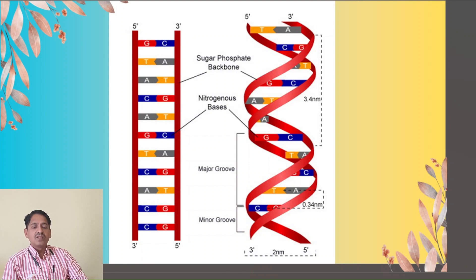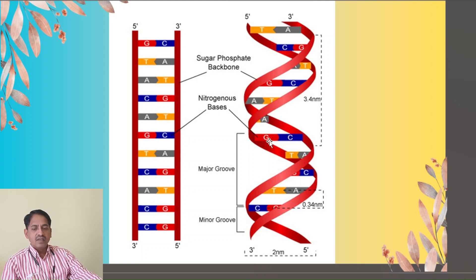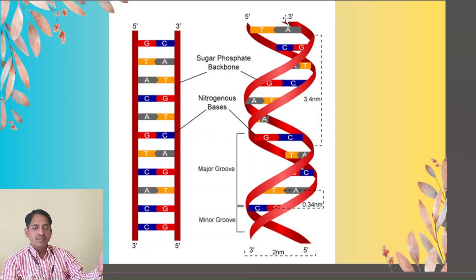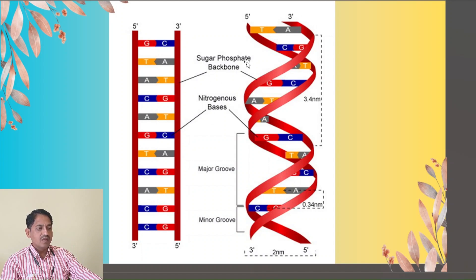Let's talk about the structure of DNA. You can see here the picture of DNA, or deoxyribonucleic acid. It consists of two long strands wound around each other. One is moving from five prime to three prime direction, and another strand is moving in the opposite direction — that is also five prime to three prime. By seeing this picture, we have to understand what DNA is made up of. As the picture clearly shows, DNA is made up of three things.